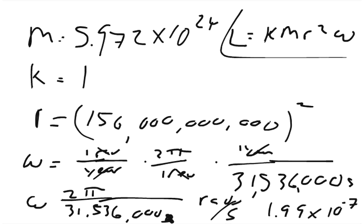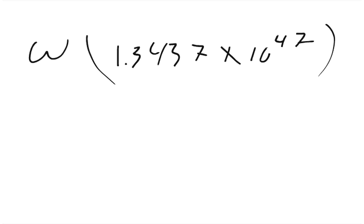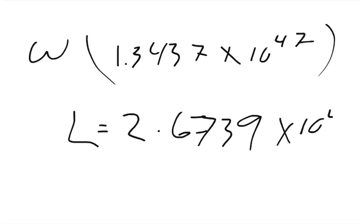So we can plug in all of our values. K equals 1, so we don't even have to put anything for that. We put in our mass and our radius squared. So the mass times radius squared is going to be 1.3437 times 10 to the 47th. And then we've got to multiply this times the angular speed, which was 1.99 times 10 to the negative 7th. So you plug that in, and you get that the angular momentum of the Earth orbiting the Sun is 2.6739 times 10 to the 40th.